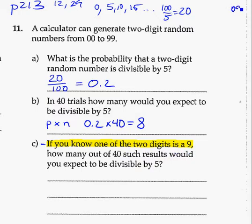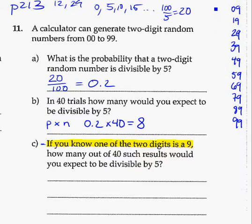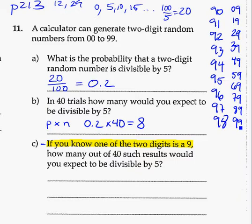So let's think. We could have 09, 19, 29, etc. All those have one digit that's a 9. But what other numbers could we also have? We could also have 90, 91, 92, and the rest of the 90s. We already wrote 99. So those are all the possible outcomes from 0 to 99 that have at least one of their digits as a 9. So how many is that? If we count up.